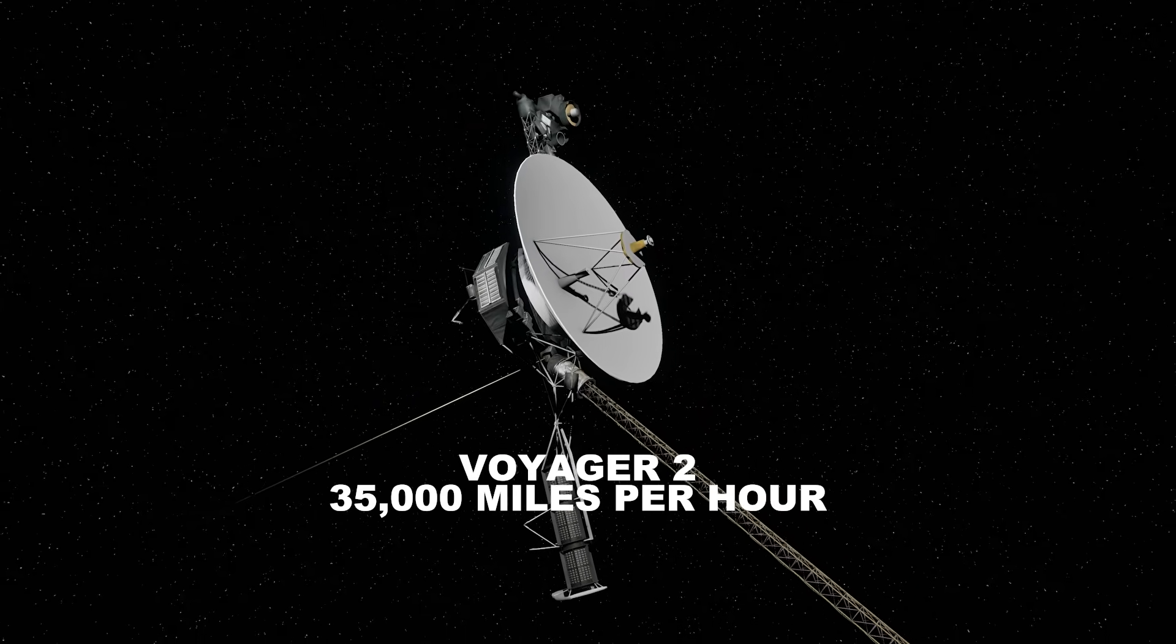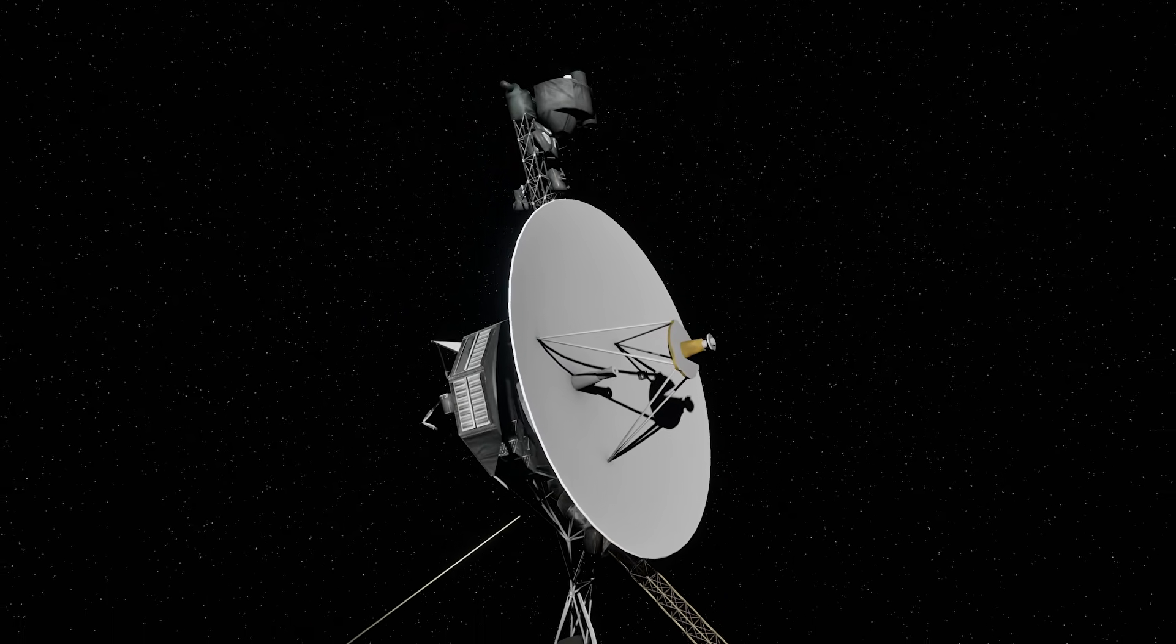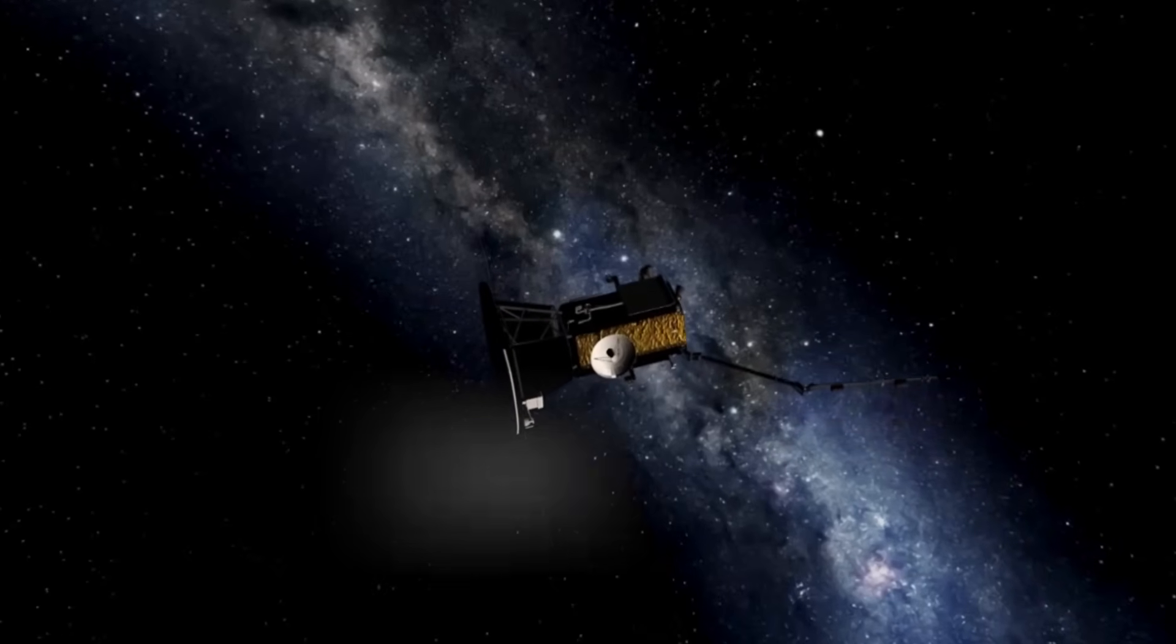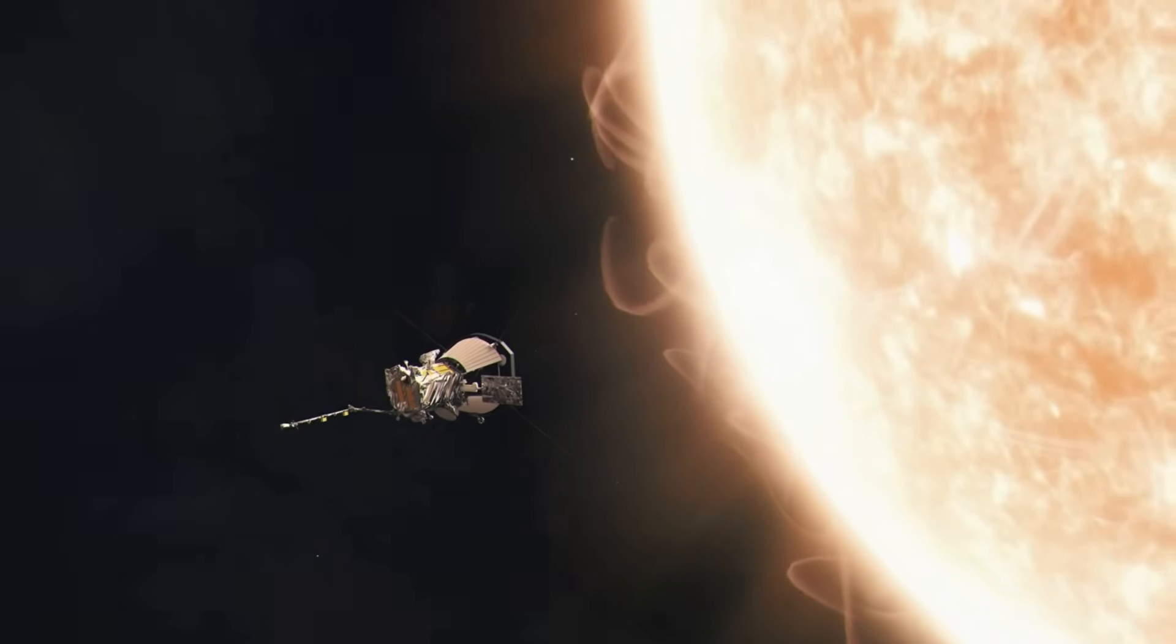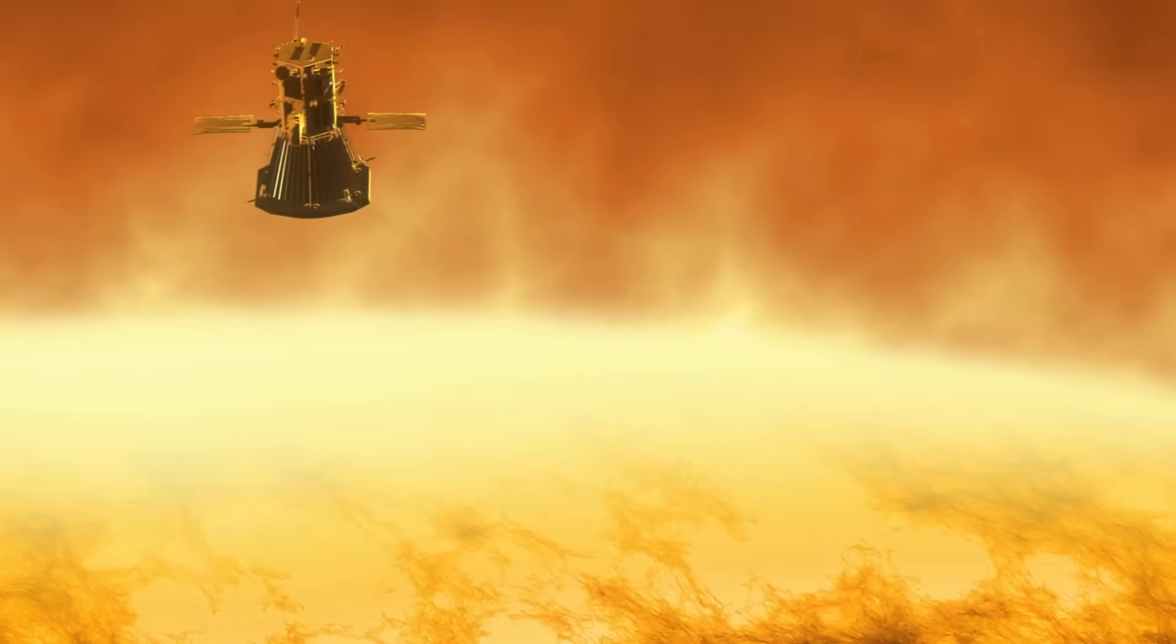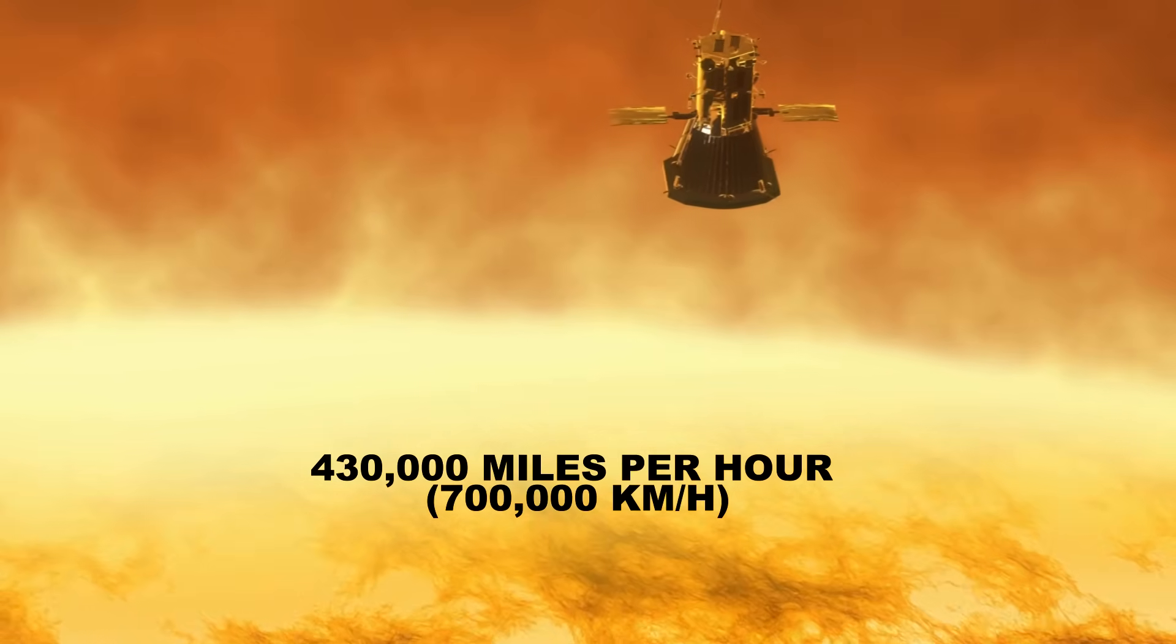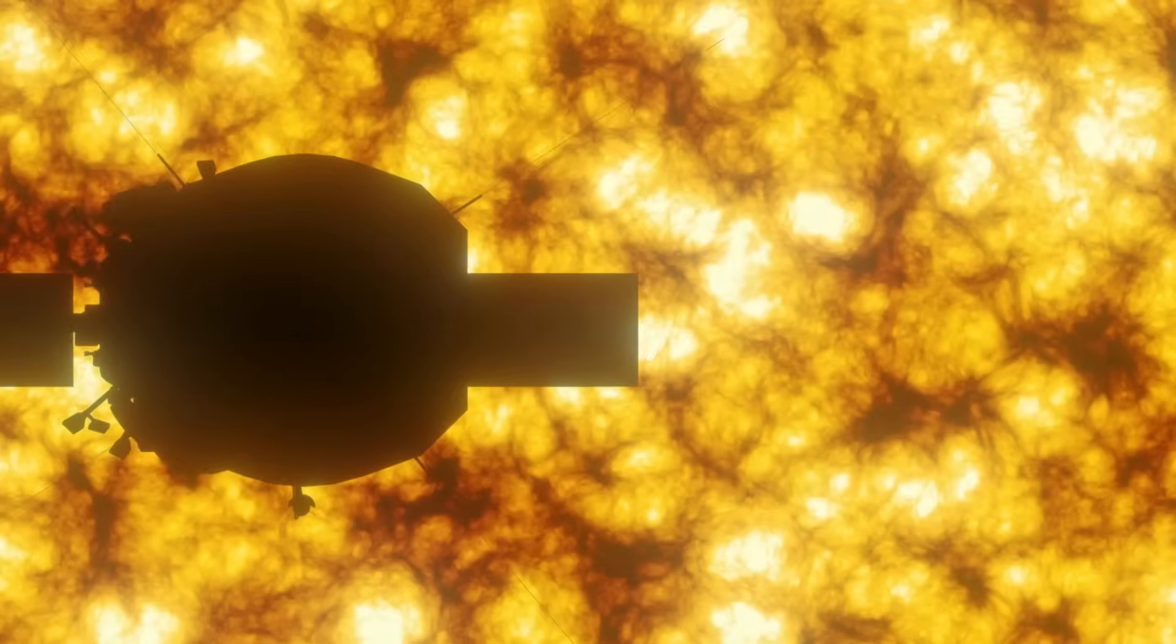Voyager 2 travels slightly slower, at about 35,000 miles per hour. These figures are astonishing, but they have been surpassed. The fastest spacecraft ever built to date is the Parker Solar Probe, launched by NASA in 2018 to study the Sun from a record distance. Thanks to multiple gravity assists from Venus and its increasingly close orbit around the Sun, Parker Solar Probe will reach an estimated top speed of 430,000 miles per hour. This speed is more than 11 times greater than that of Voyager 1.